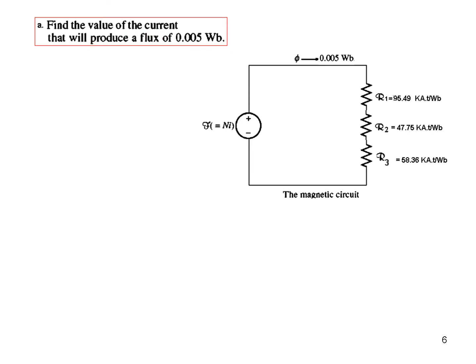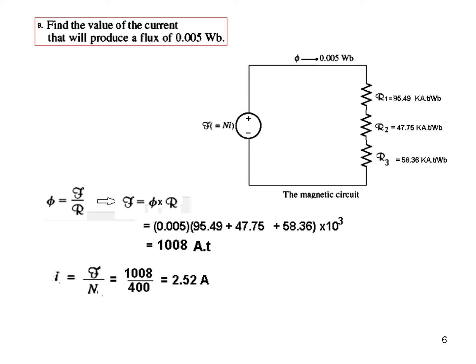Just a reminder that we have to find the current. So this is our magnetic circuit now. From here we can find the force because phi given, total reluctance given. So phi can be written as magnetomotive force divided by reluctance, or magnetomotive force is phi × R. So plugging in the value of phi 0.05 and all three R's multiplied by 10^3 because these are in kilos, so the force will be 10,008 ampere turn. And so current now is force divided by N, 10,008 divided by 400 is the number of turns here, so it is 2.52 ampere is the current. So that is the answer of the first part.